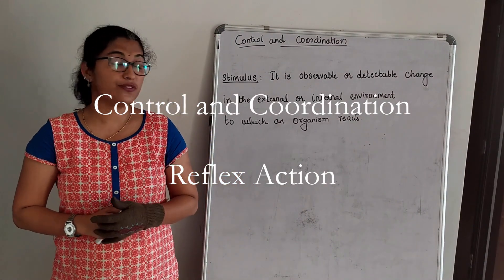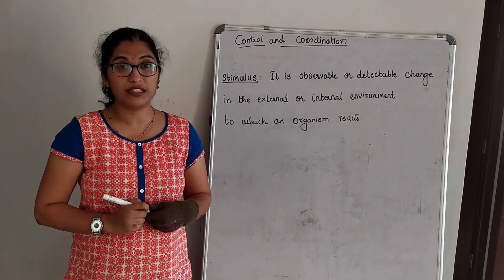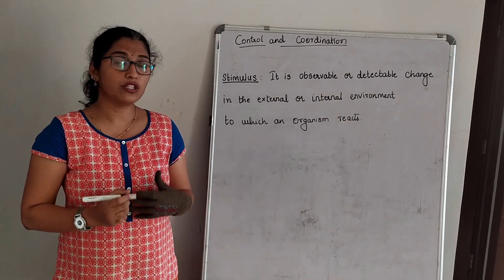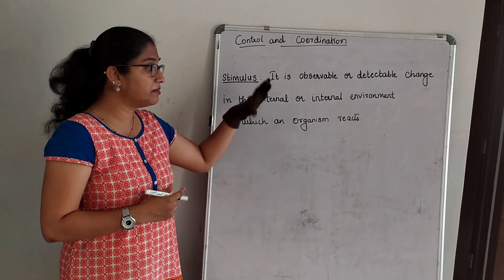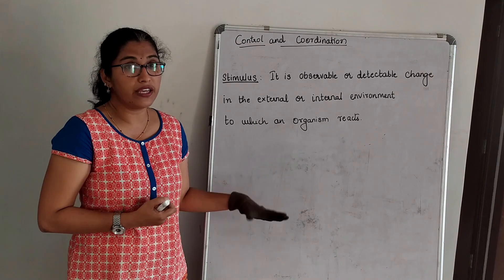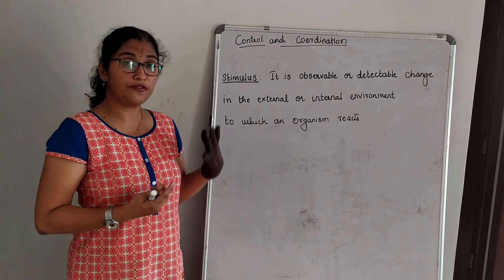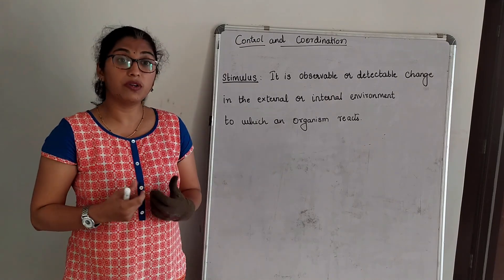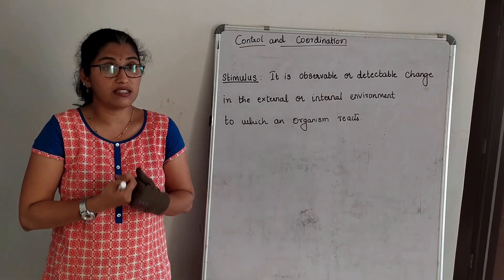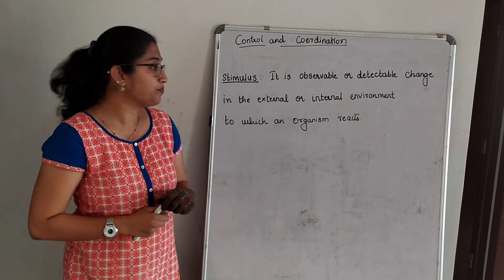Good morning. In our previous video we understood the structural and functional unit of a nervous system, which is a neuron. We saw how a neuron looks like, the different parts of a neuron, and the role of each and every part. Now let us move on to the next concept of nervous system — stimulus. We will learn two different concepts on stimulus. It is a very small but interesting session.